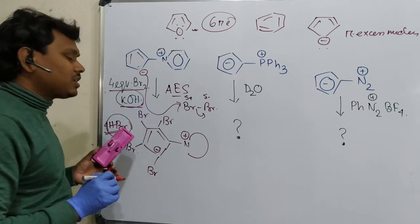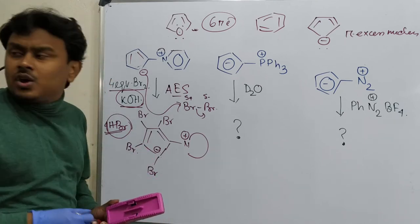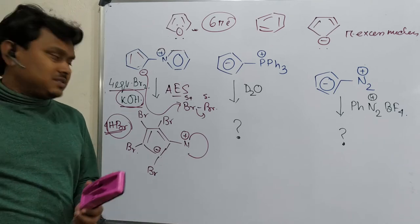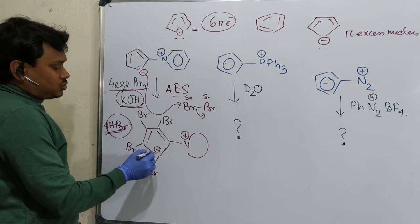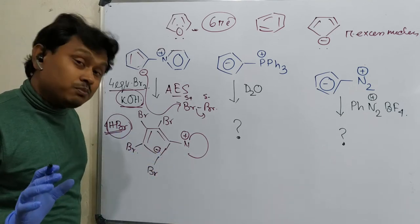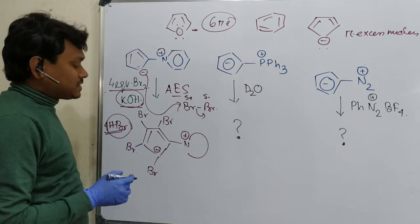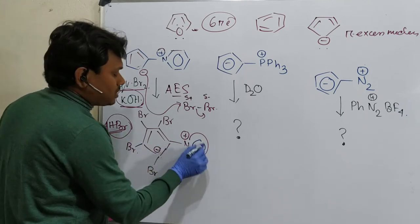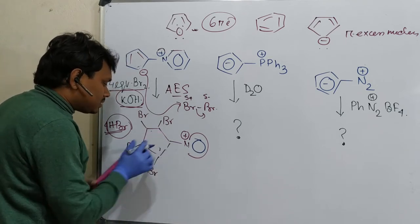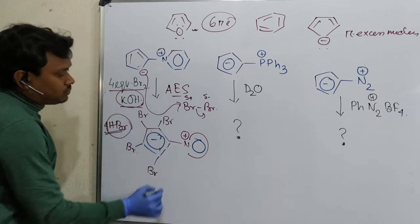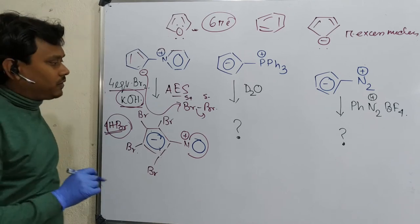Four brominations occur, producing four equivalents of HBr. KOH is added to consume the HBr. If KOH were absent, HBr being a strong acid could protonate the anion and prevent further aromatic electrophilic substitution. So KOH is essential to drive facile tetrabromo aromatic electrophilic substitution. The ultimate product is the 4-bromo substituted cyclopentadienyl zwitterion.